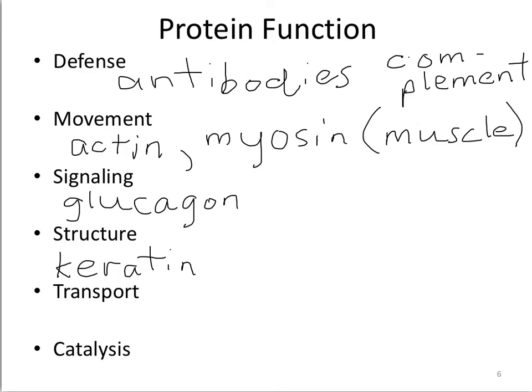Another function of proteins is transport. Cells and whole organisms need to move chemicals in and out. The classic example is hemoglobin, the protein that catches oxygen from your lung area and circulates it to the rest of the body. Transport proteins are abundant in cell membranes, and in fact most cell membranes are about 50% protein, primarily for transport and some metabolic functions.